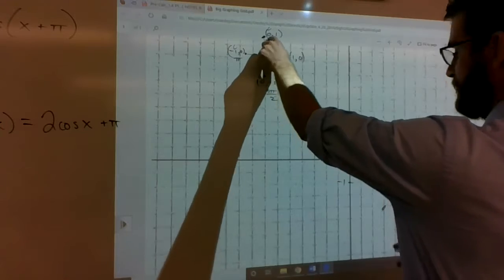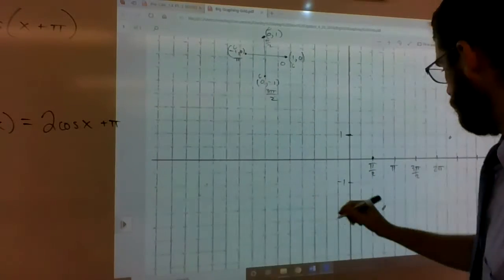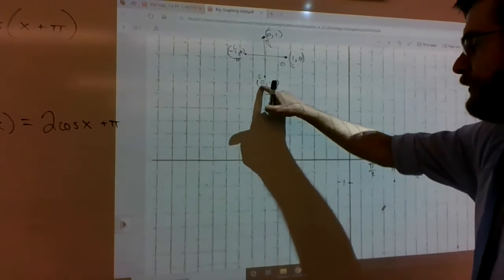At π/2, cosine has a value of 0. At π, cosine has a value of negative 1. At 3π/2, cosine is a value of 0 again.